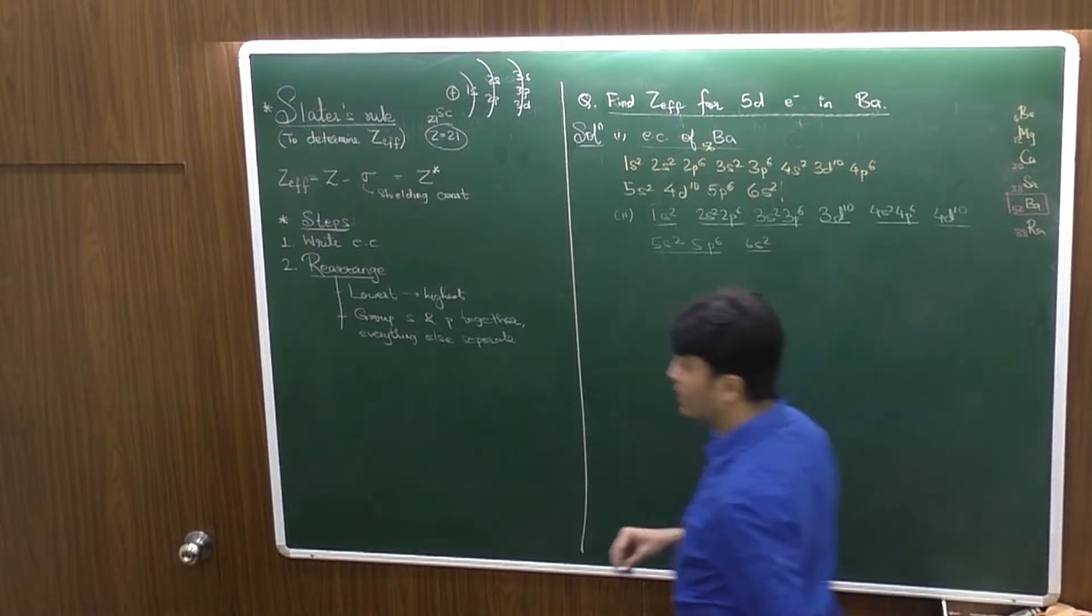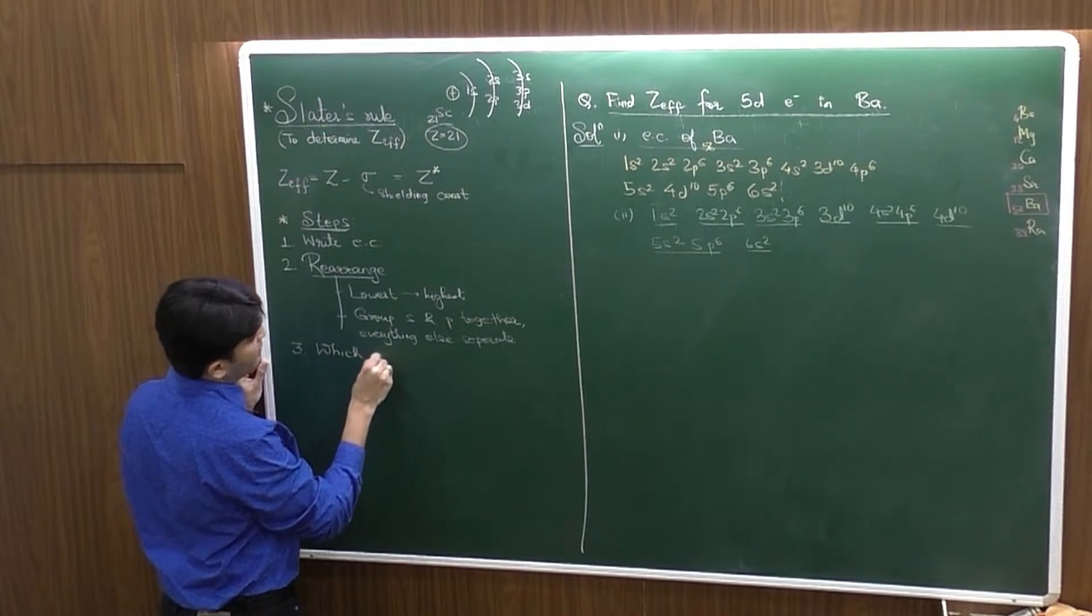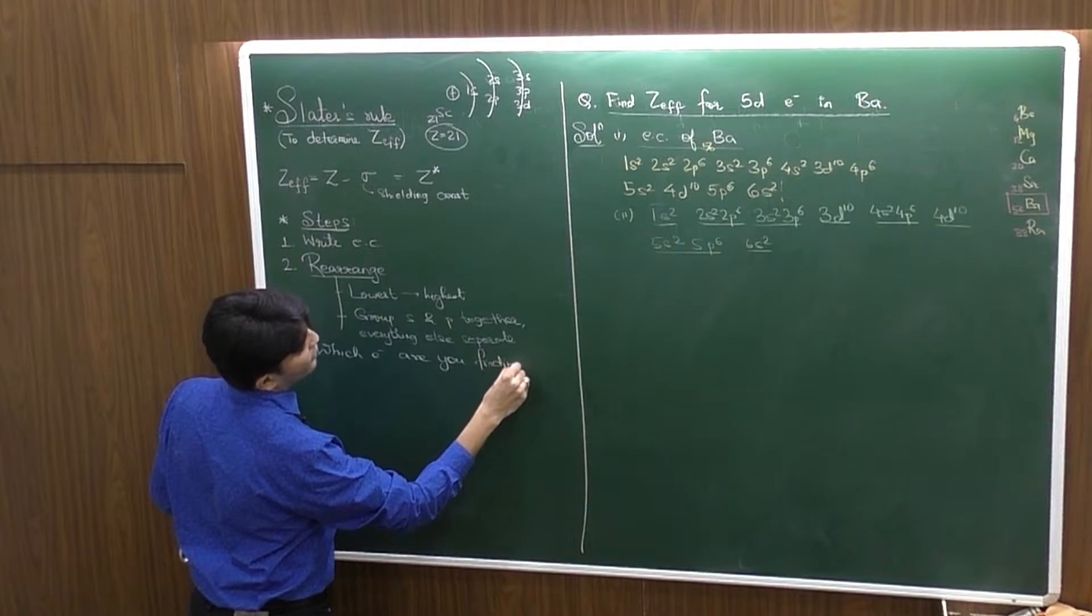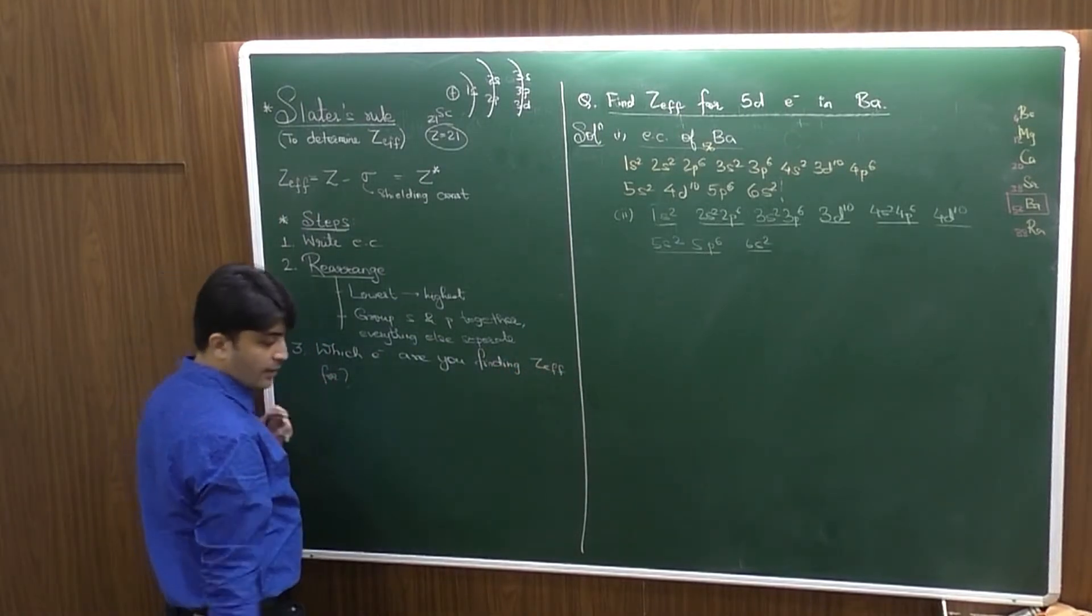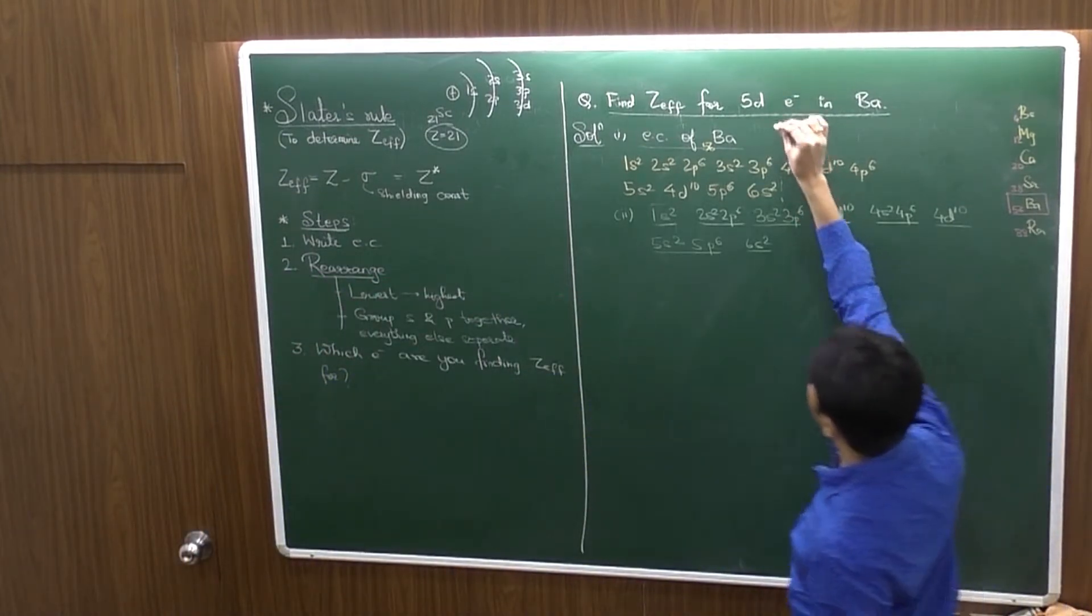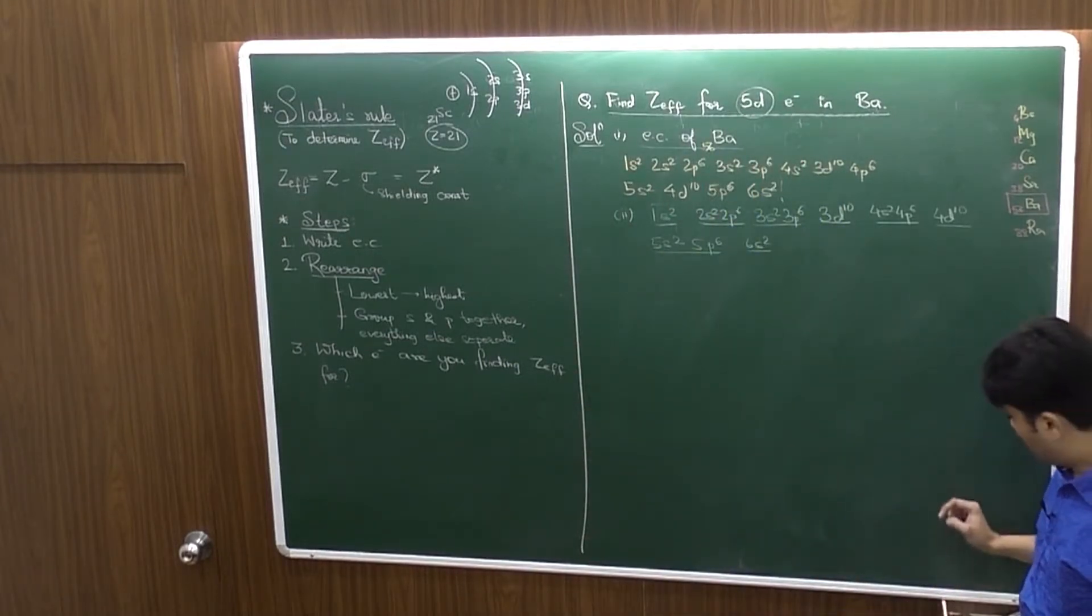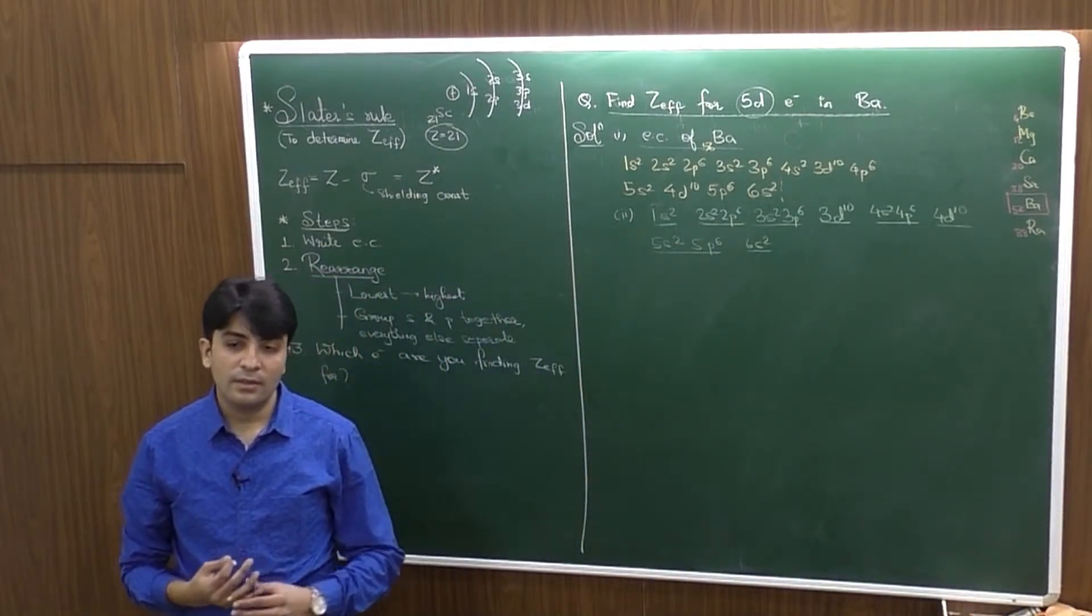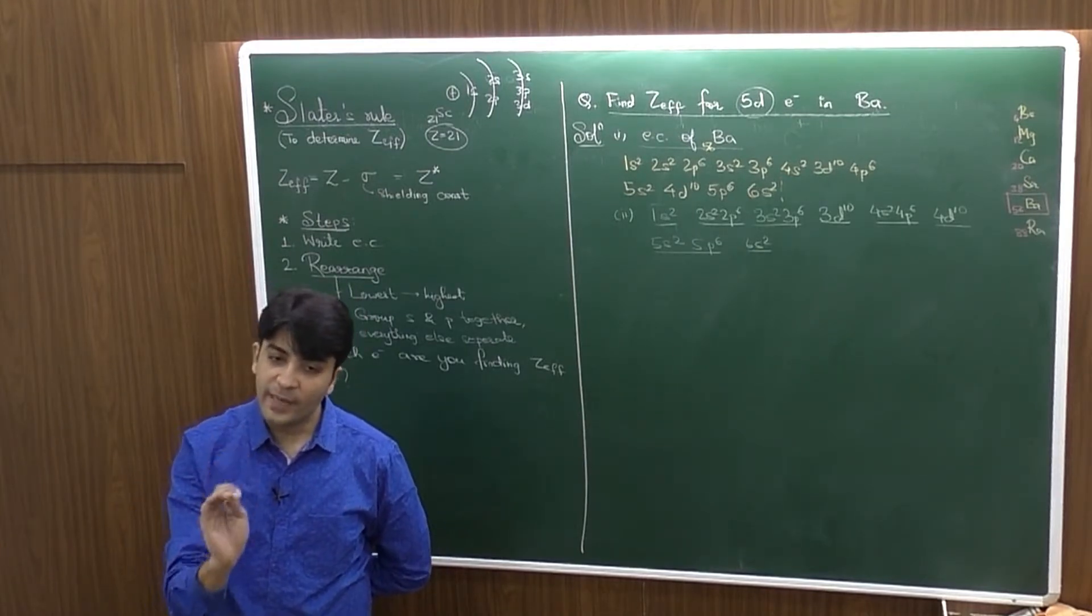Now, in the above, 3D comes after 4S. But for Slater's rule, only for Slater's rule, I have to write them together according to the electrons in the third shell. So, I have 3S2 3P6 then 3D10. Again, in fourth, I have 4S2 4P6 together, 4D separate. In fifth, I have 5S2 5P6 only. And in sixth, I have 6S2.